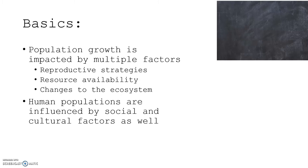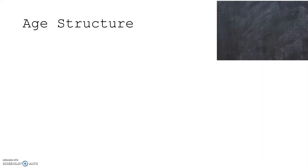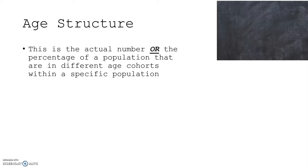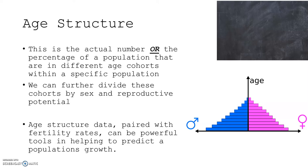These factors can be felt in a population for generations. Age structure is the actual number or percentage of a population that are in different age cohorts within a specific population — typically expressed as percentage of the population. We can further divide these cohorts by sex and reproductive potential. Age structure data paired with fertility rates can be a powerful tool in helping to predict a population's growth.